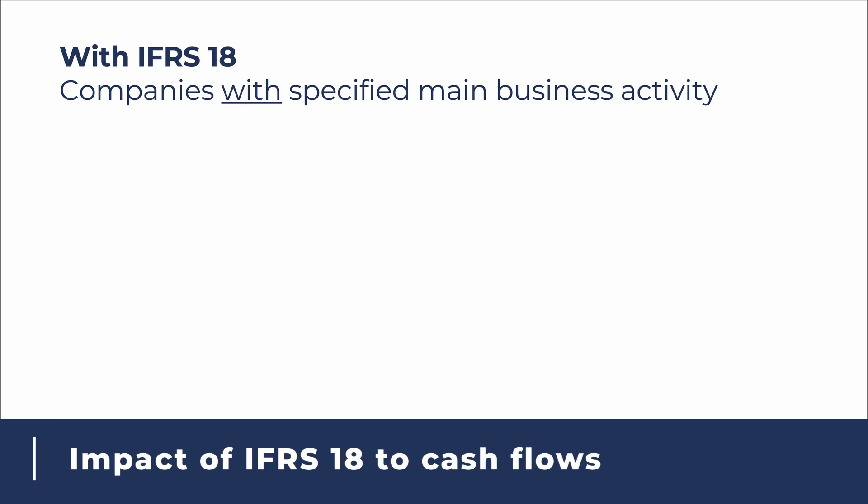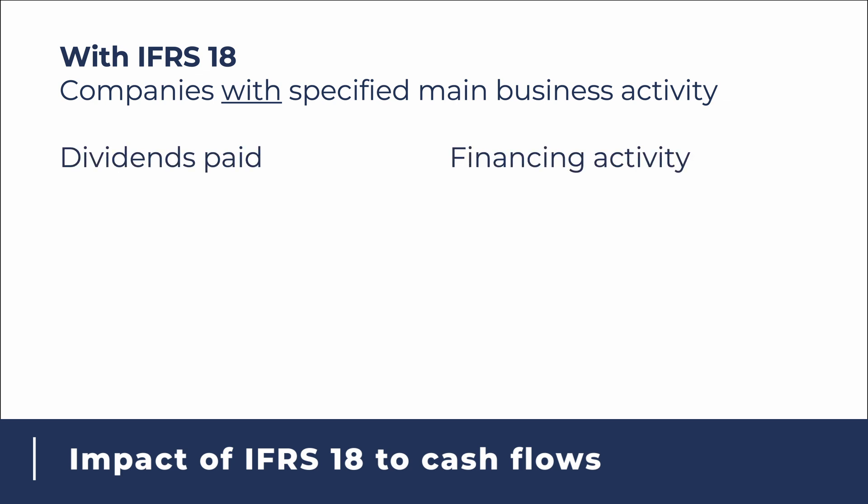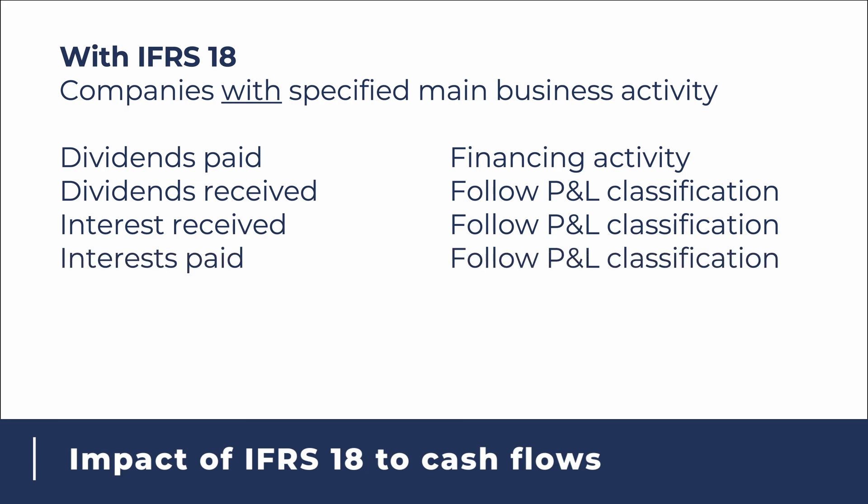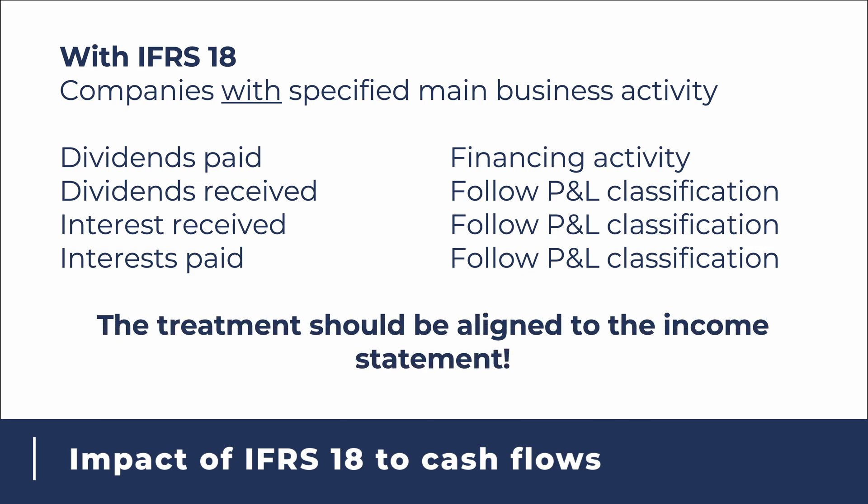So what happens if you are preparing cash flows for a company with a specified main business activity? First, dividends paid should still always be a financing activity — there are no more options on dividends paid regardless of whether you are in the general requirements or not. For dividends received, interest received, and interest paid, the treatment of the cash flows should be the same as the category it is included in the income statement. You should align the P&L classification — if dividends received is in the investing category in the income statement, it should be in the investing activities in your cash flows, and so on.